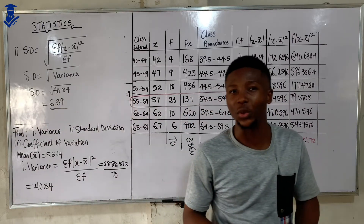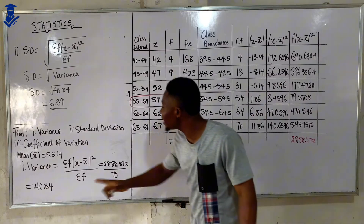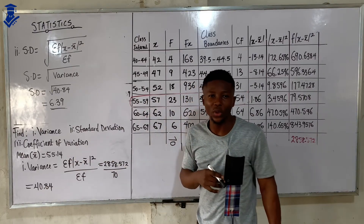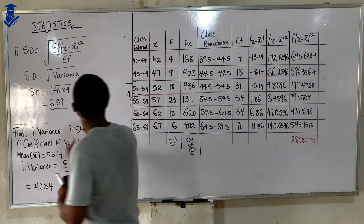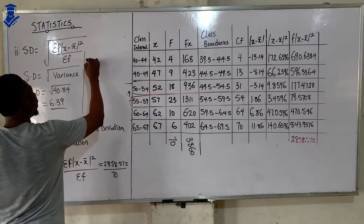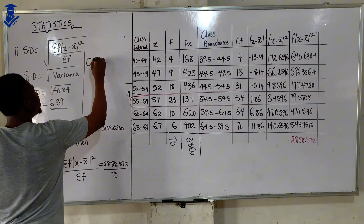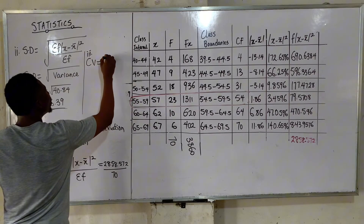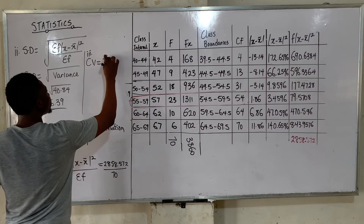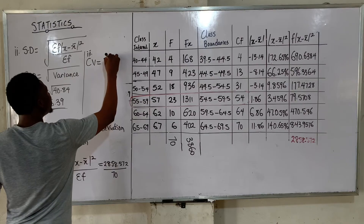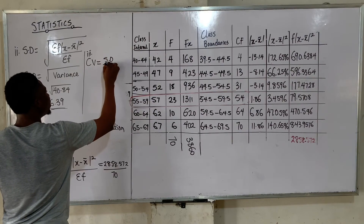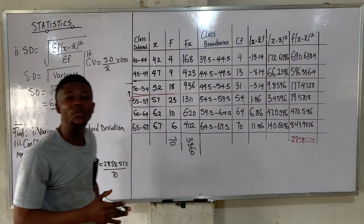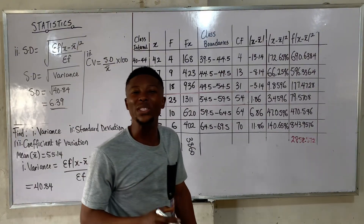Finally, we find the coefficient of variation. The CV equals standard deviation divided by the mean, multiplied by 100 — because the coefficient of variation is always expressed as a percentage.